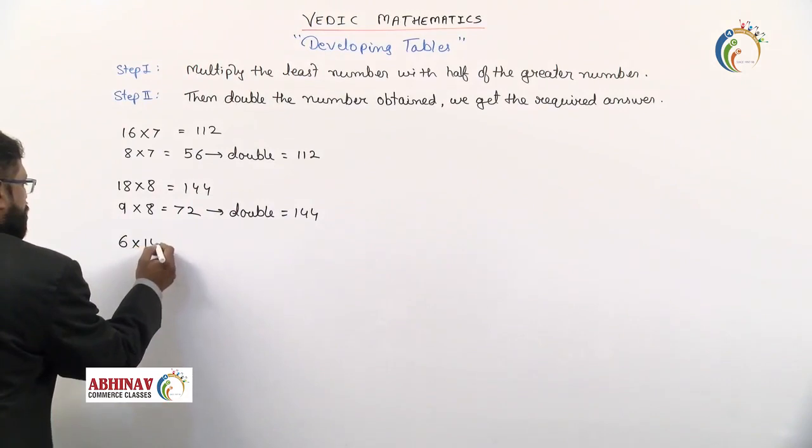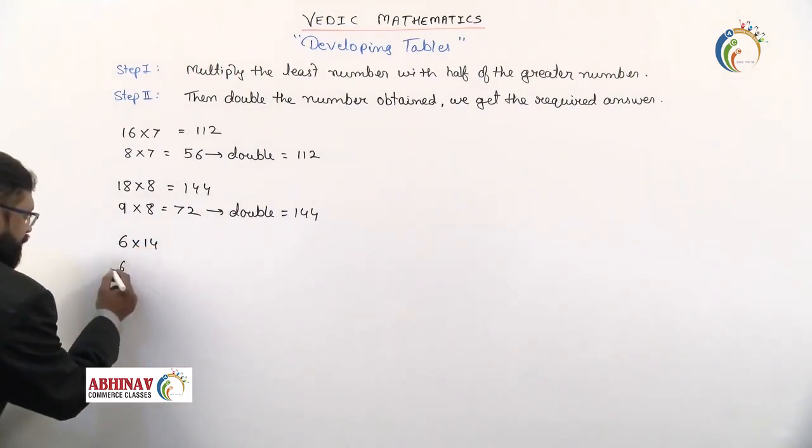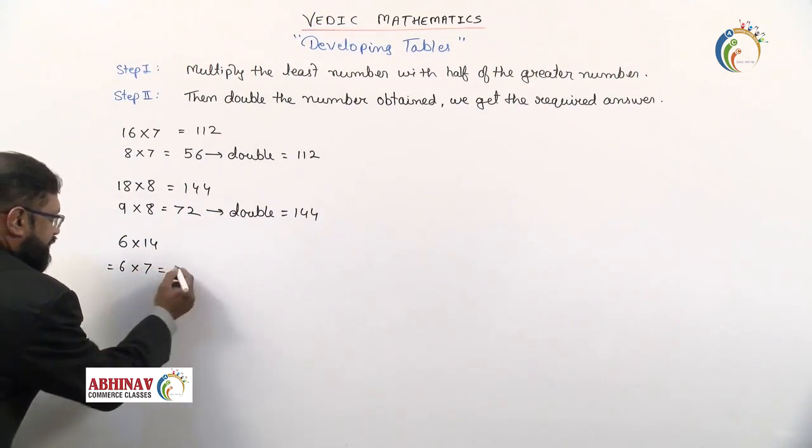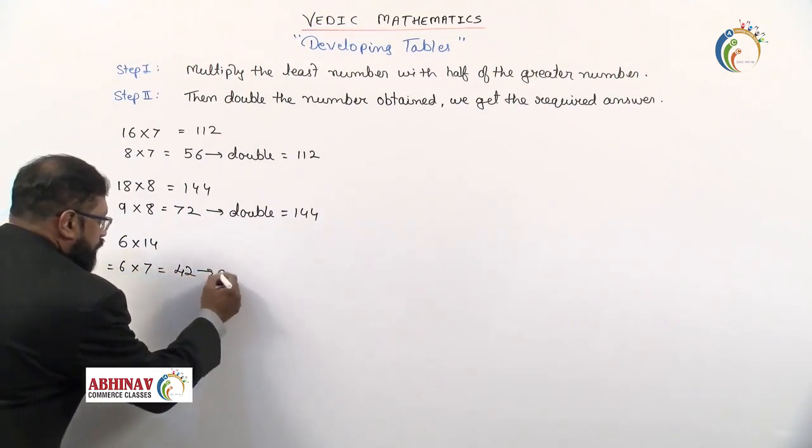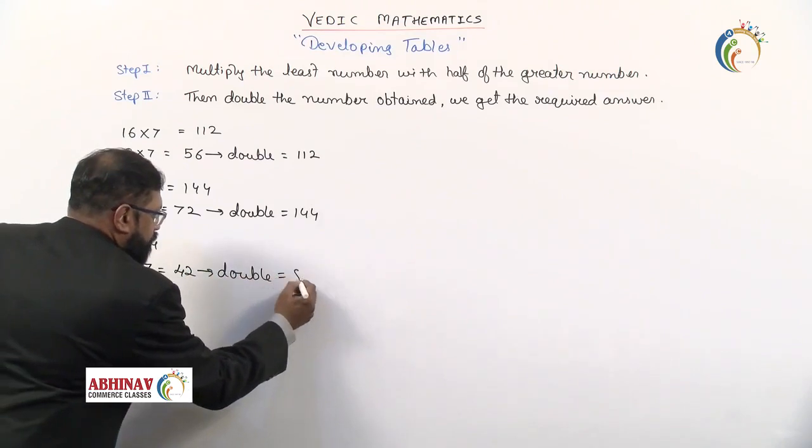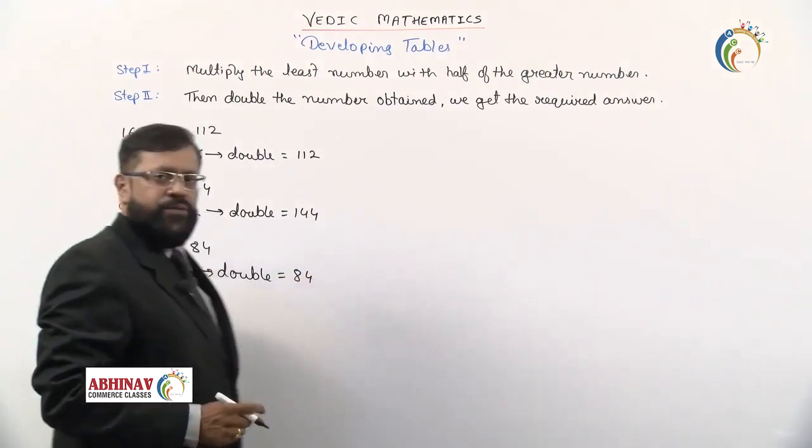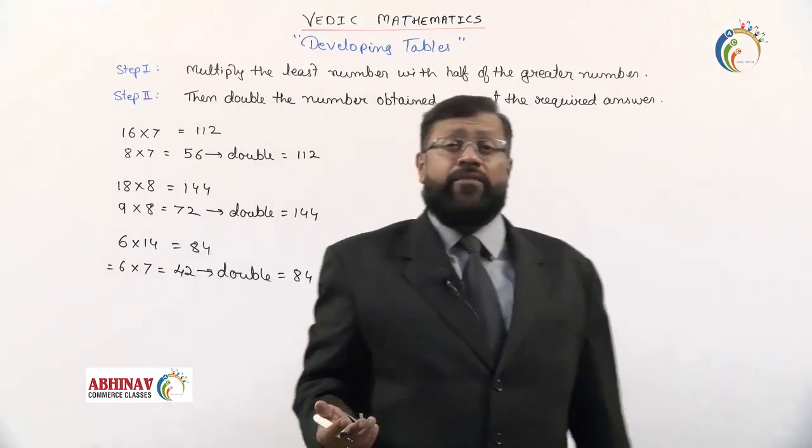One more example. We'll say it as 6 into 14. 6 is the least number, keep it as it is. 14 is the greater, half of that is 7. 6 sevens are 42. This 42 we are going to double. So when you double 42, what we get is 84. So 6 into 14 is 84. This is how we can develop the tables.